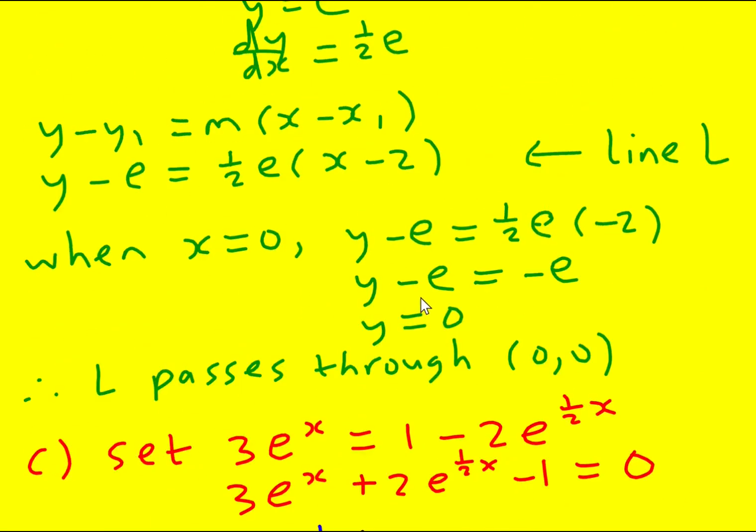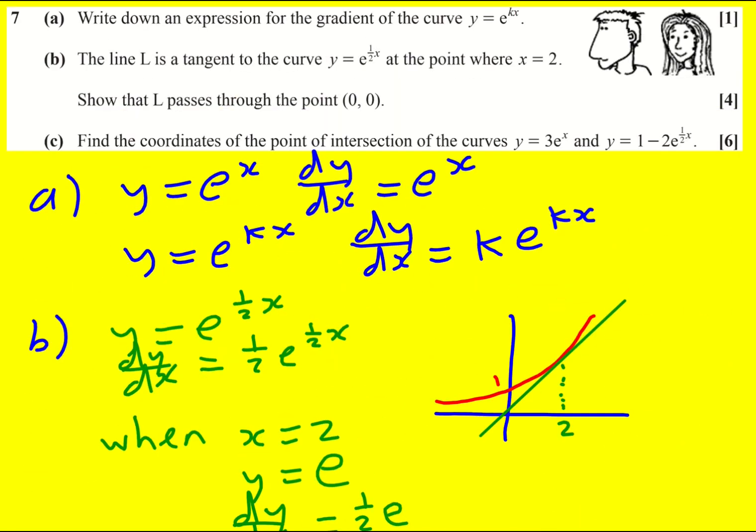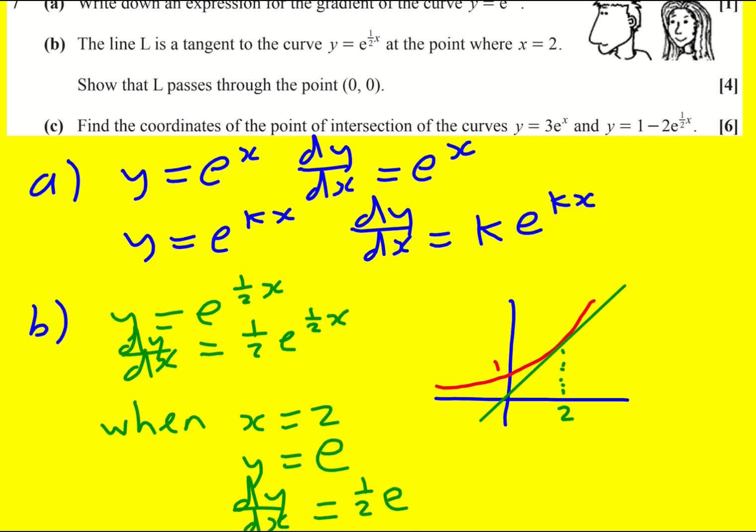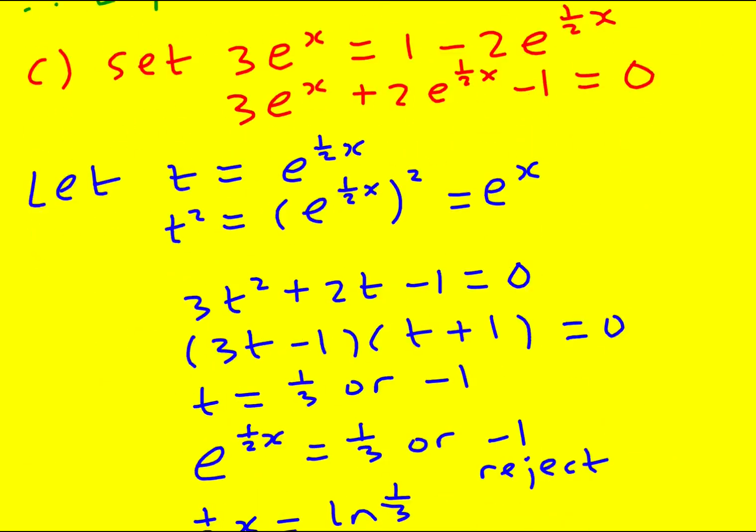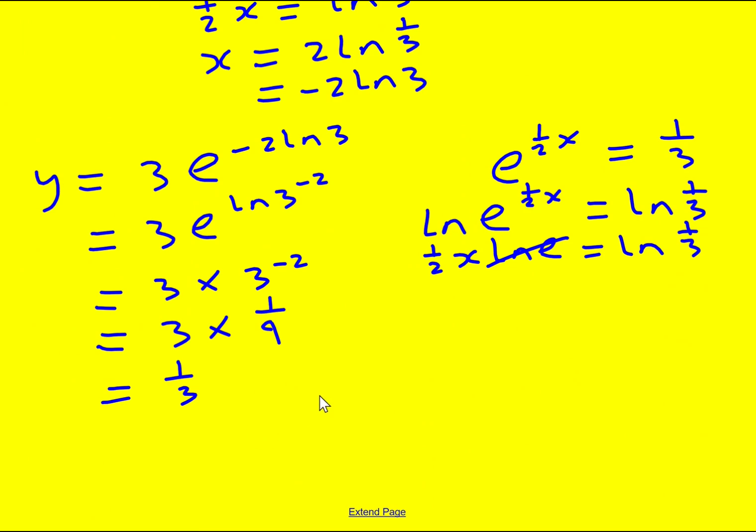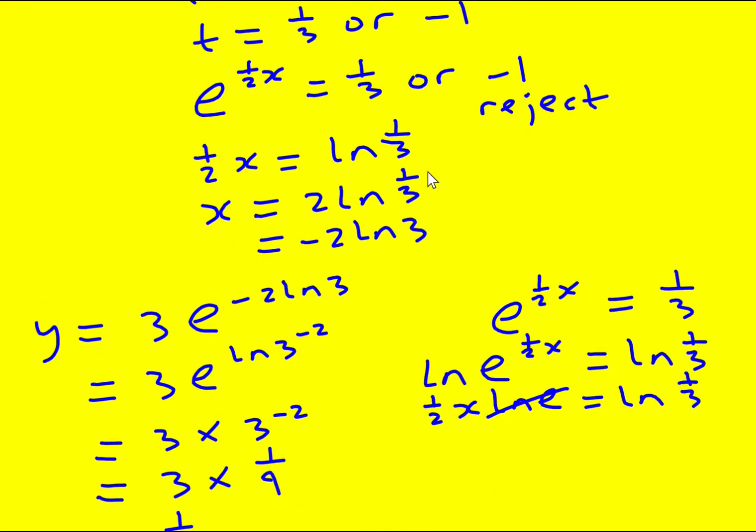So the point of intersection. Let's check the question. Yeah, it does say a singular point. We rejected the other one. The point of intersection is minus two ln three, or equivalently two ln third, and then a third.